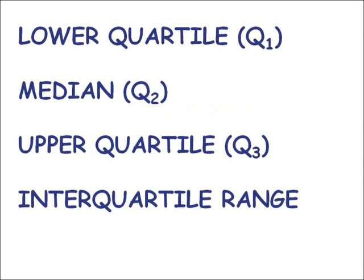Firstly, we need to define some key words. The median splits the data into two equal halves. The quartiles, as the name suggests, split the data into quarters.